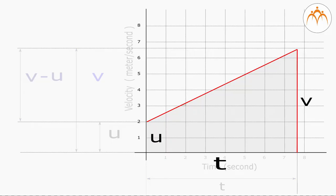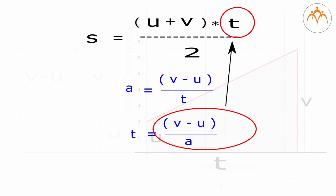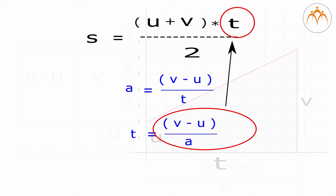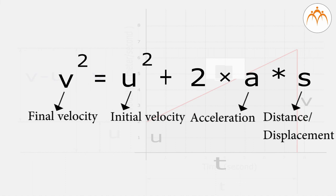Let's derive this equation from the graph. As we know, area of shaded region is the distance covered. Area of trapezoid is half product of the sum of parallel sides and distance between the lines. We will use the first equation of motion and then replace t with equivalent value. This gives us the third equation of motion: V square is equal to u square plus 2 into acceleration into distance. V is the final velocity, U is the initial velocity, A is the acceleration, S is the distance or displacement.